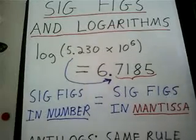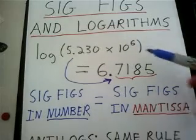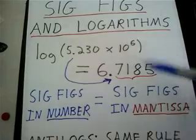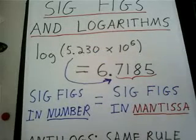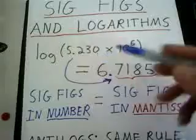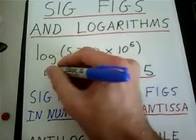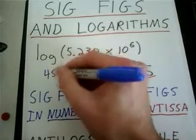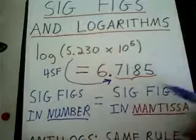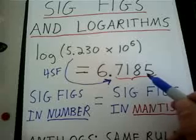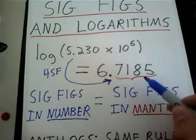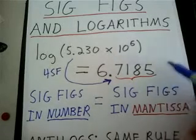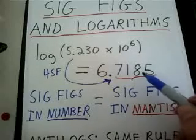For example, in this example it says 5.230 times 10 to the negative 6. How many sig figs does that have? It looks to me like this has 4. Notice that in the mantissa — i.e., whatever comes after the decimal point in this answer here — that also has 4 significant figures.